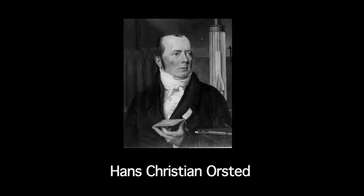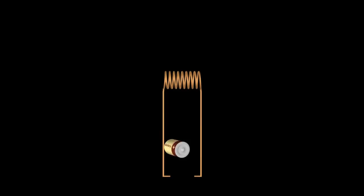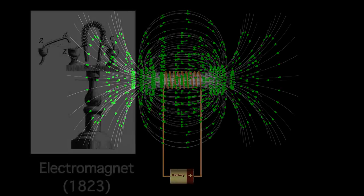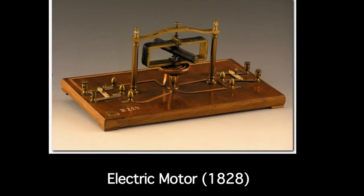In the 17th century, Hans Christian Orsted found that an electrical current in a wire produces a magnetic field. This discovery led to many innovations in the technological world, including the invention of electromagnets and the first electric motor.